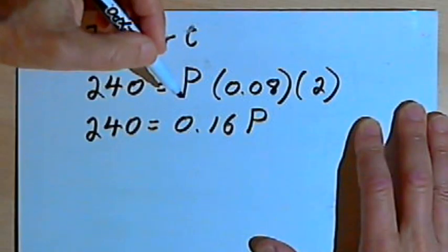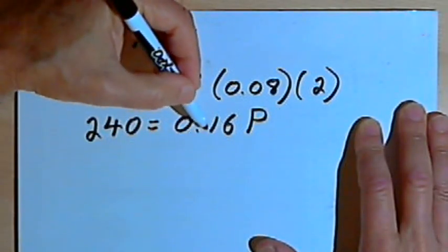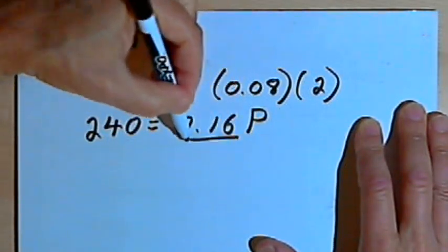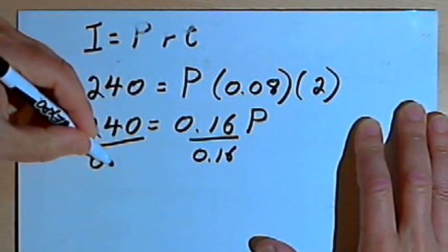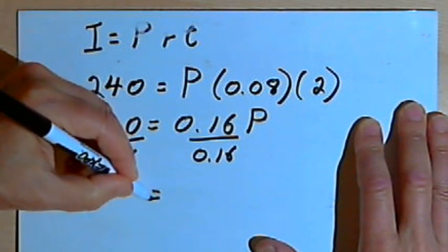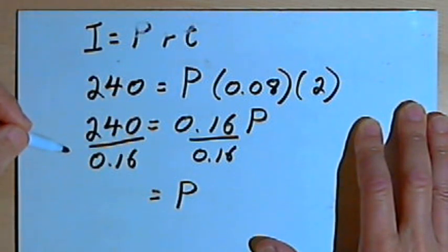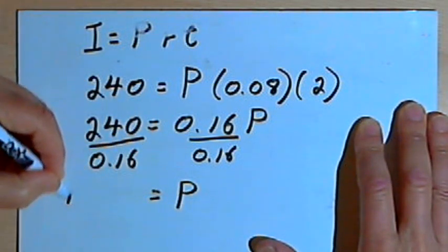And now all I would have to do is divide both sides by 0.16. So I'm solving this for P. And I'm going to find that P equals $1,500.